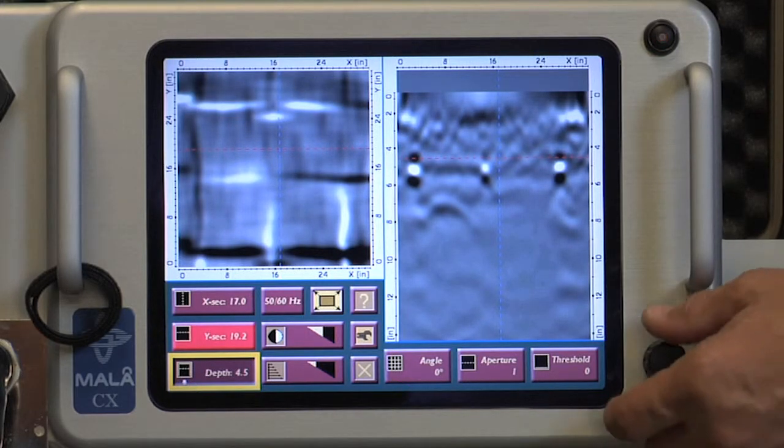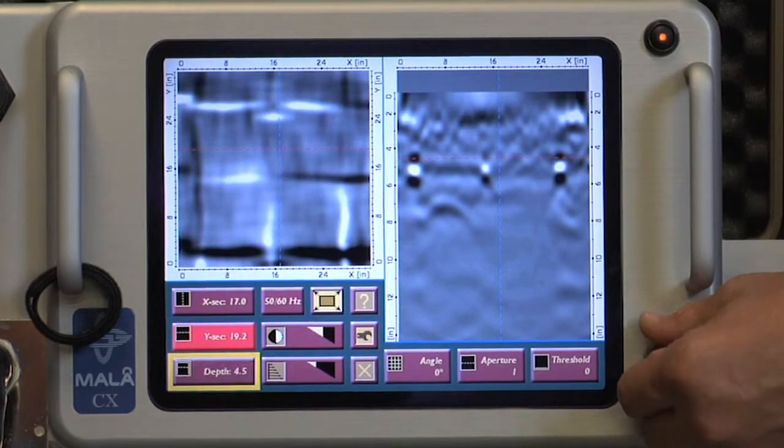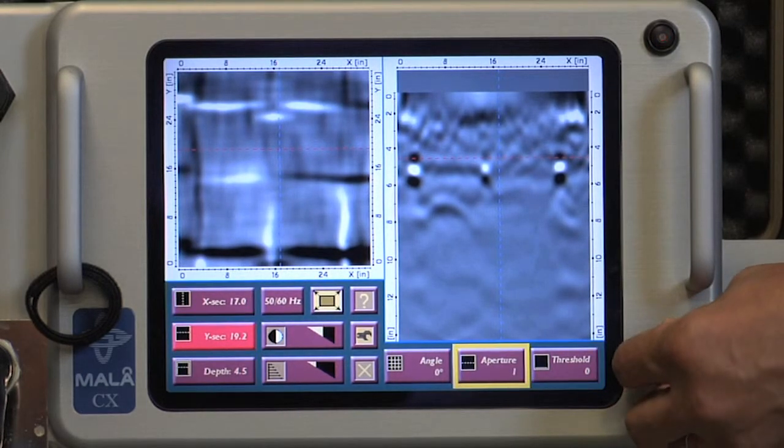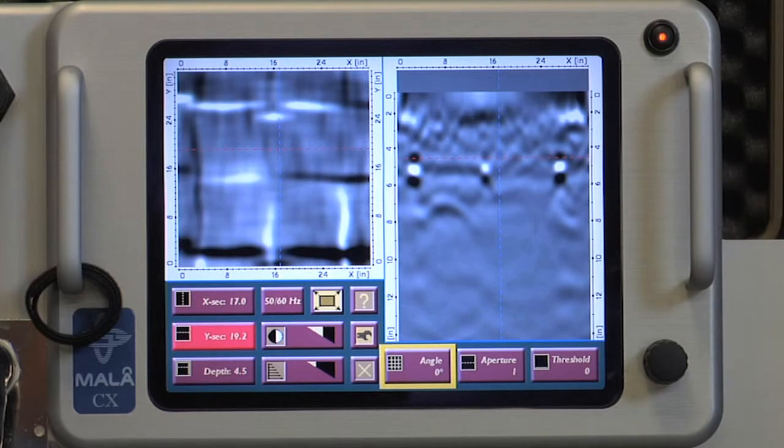The three larger icons displayed underneath the 2D screen are Angle, Aperture, and Threshold. These three icons can aid in the interpretation of the 3D image data and are typically used at the discretion of the operator depending on the data set and the complexity of the media.